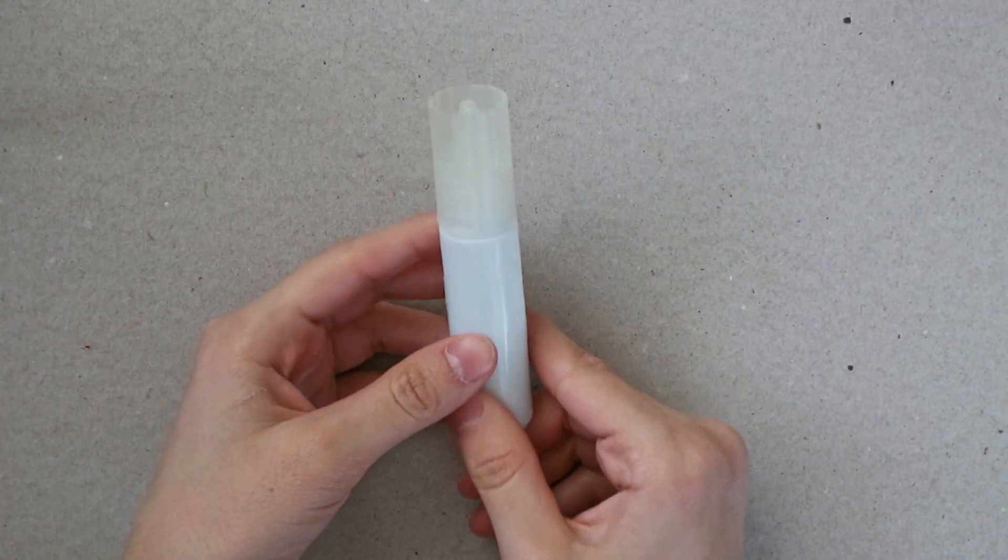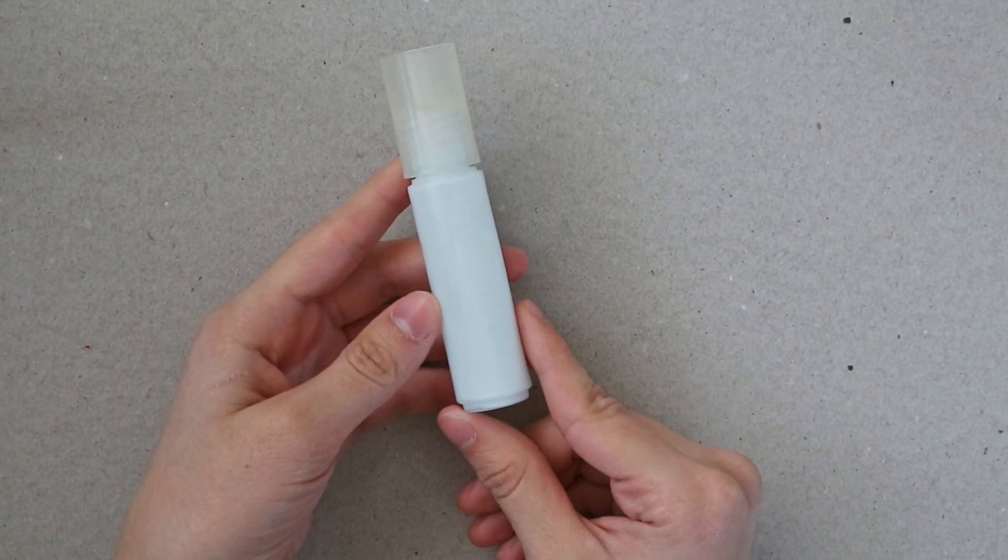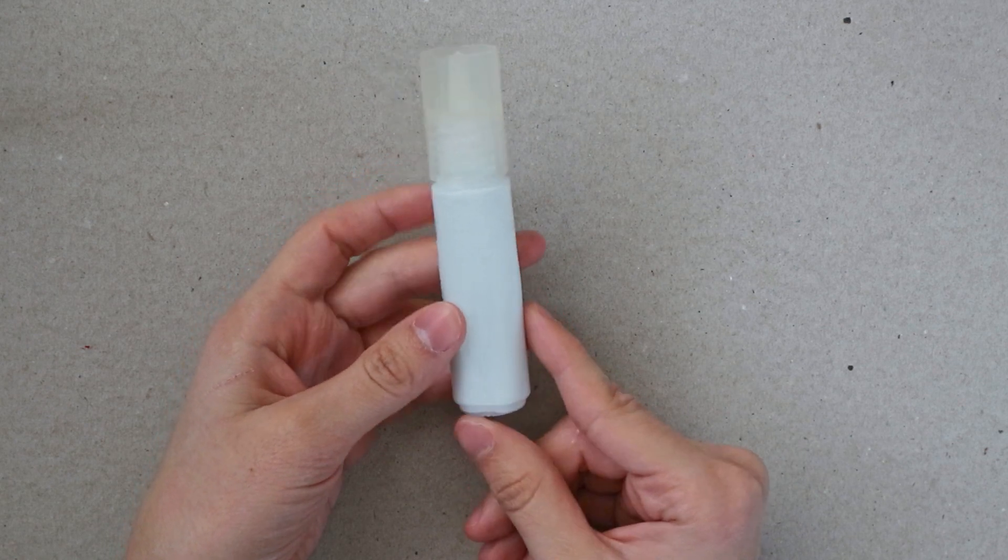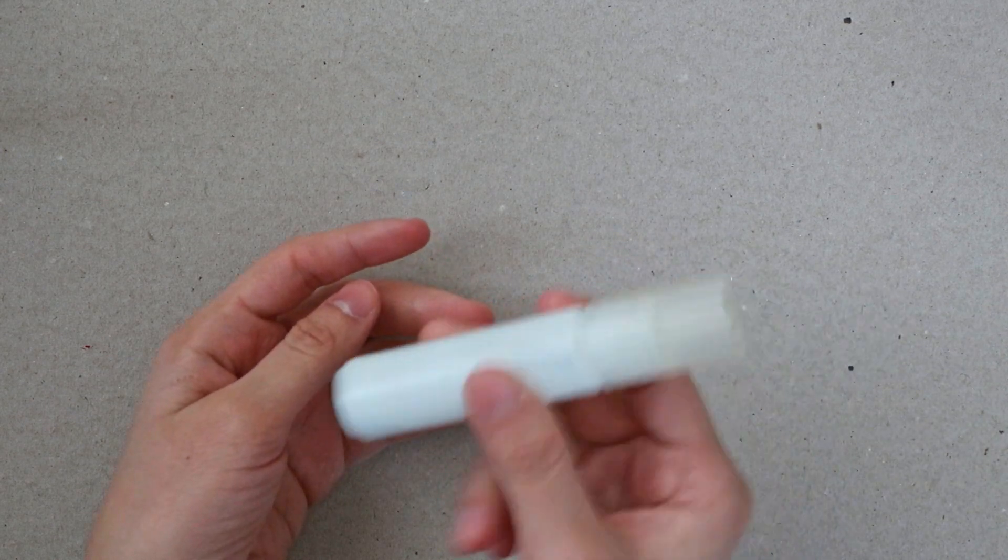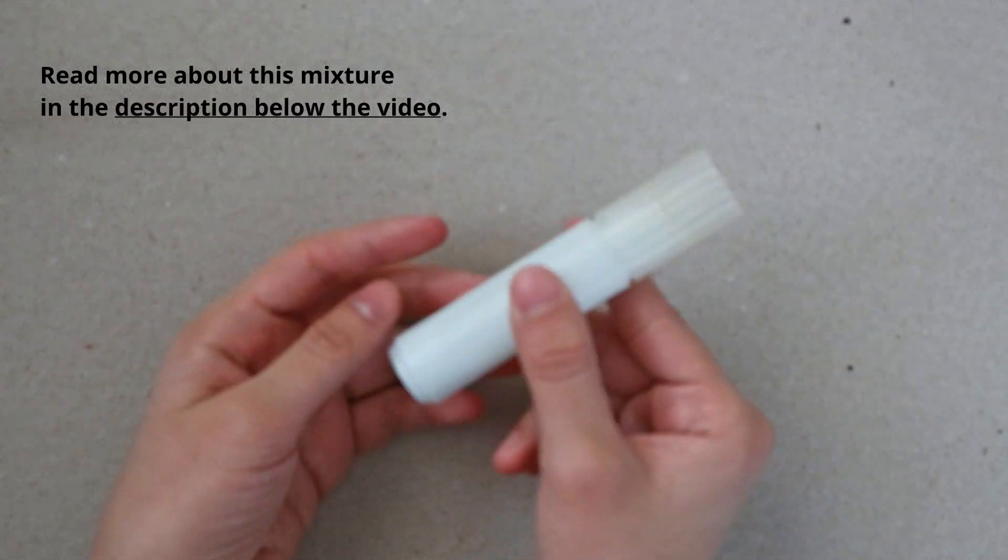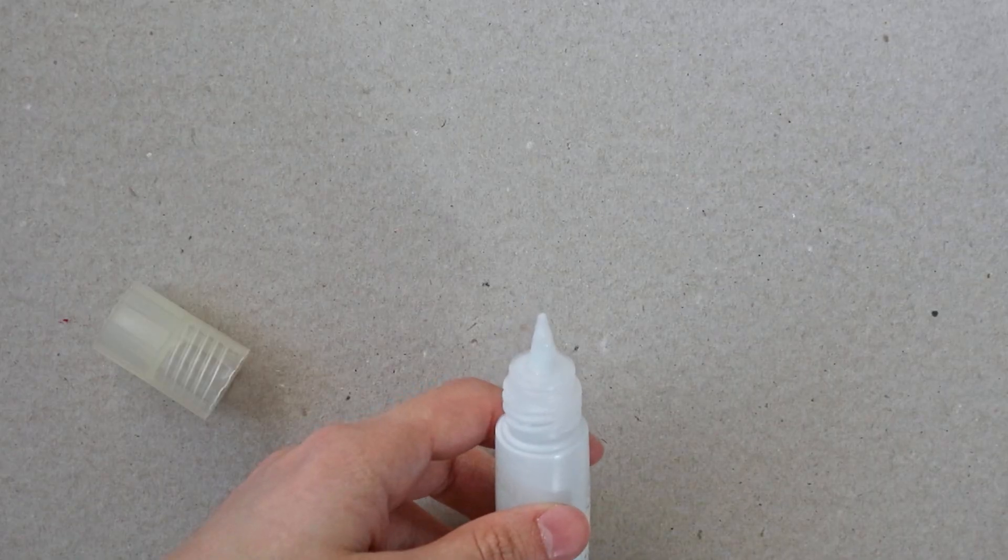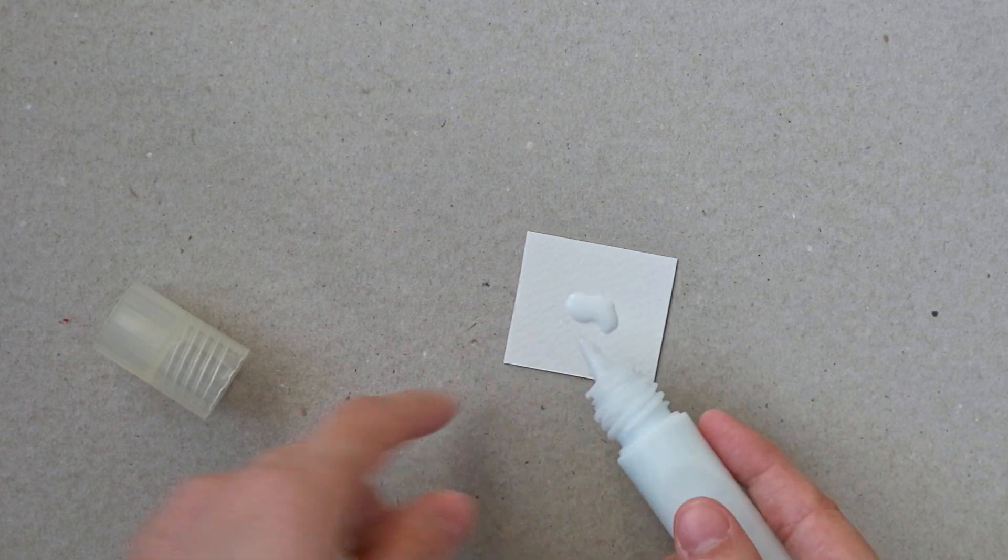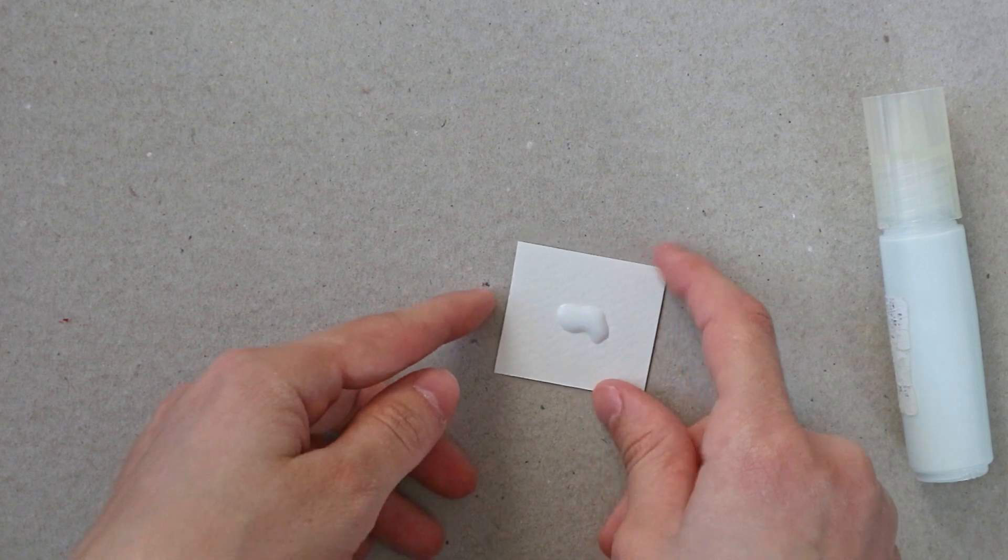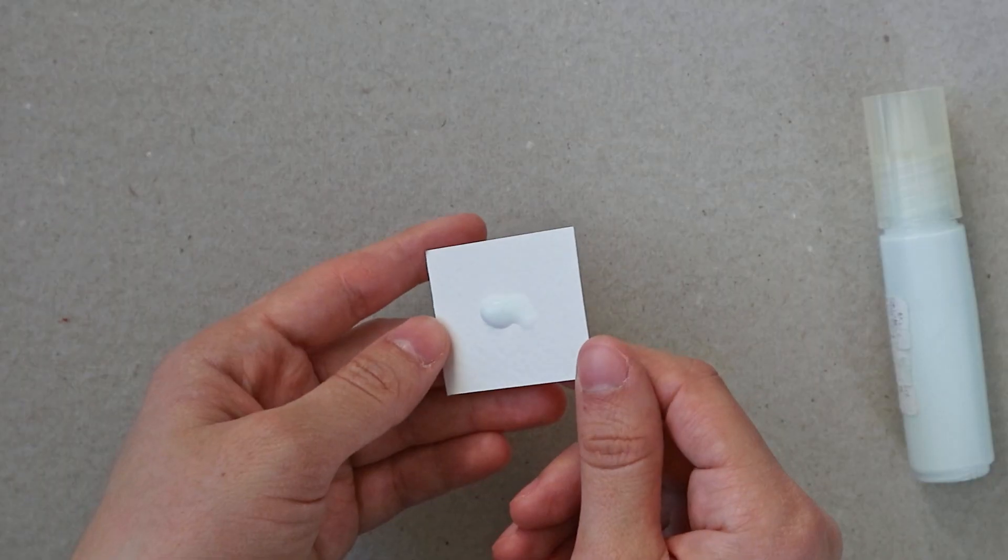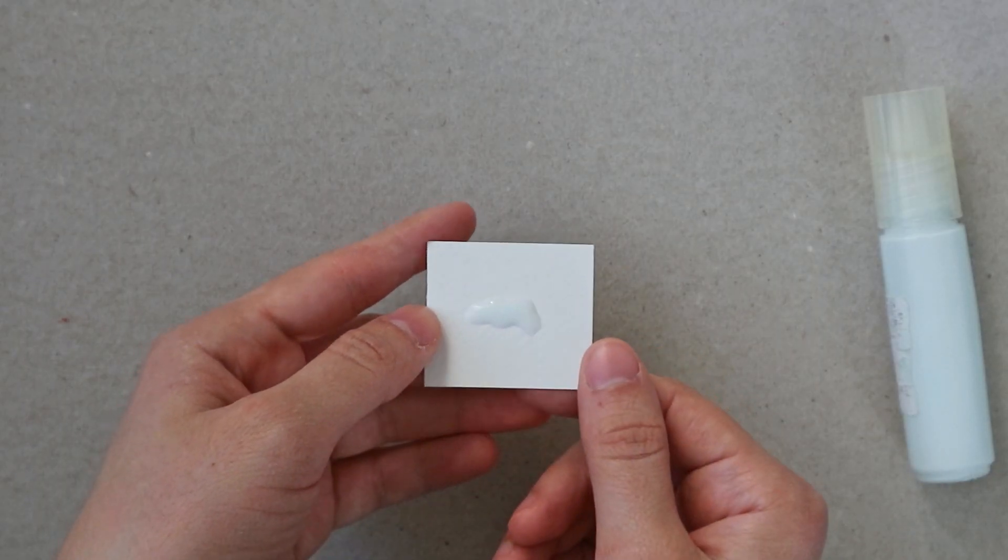Another glue that I use now and then, not as often as the previous one, is actually a combination of three elements: water, glue, and alcohol 70% volume. This mixture, when you apply it on your quilling elements, helps them to become more sturdy and to dry faster.